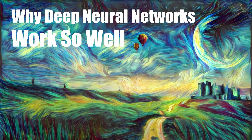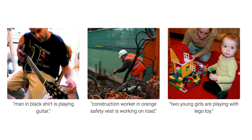Hey everyone, have you ever wondered why deep neural networks work so well? I'm sure you must have come across examples such as these where you feed in an image as an input and it outputs captions such as "man in black shirt is playing a guitar."